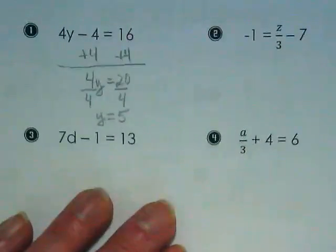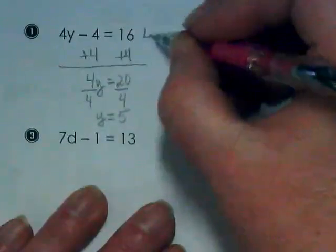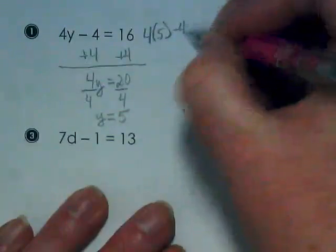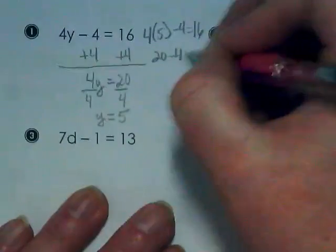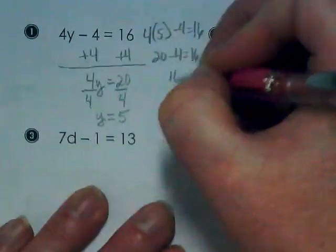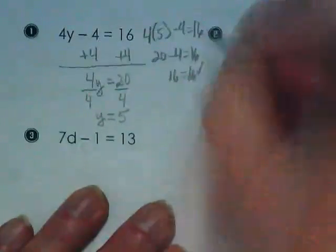We always check our work. 4 times 5 minus 4, does that equal 16? Well, we've got 20 minus 4, and so it does check that 16 is equal to 16.